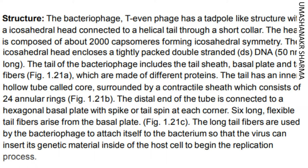The tail has an inner hollow tube called core, surrounded by a contractile sheath which consists of 24 annular rings. The distal end of the tube is connected to a hexagonal basal plate with spike or tail pin at each corner. The long tail fibers are used by the bacteriophage to attach itself to the bacterium so that the virus can insert its genetic material inside the host cell to begin the replication process.